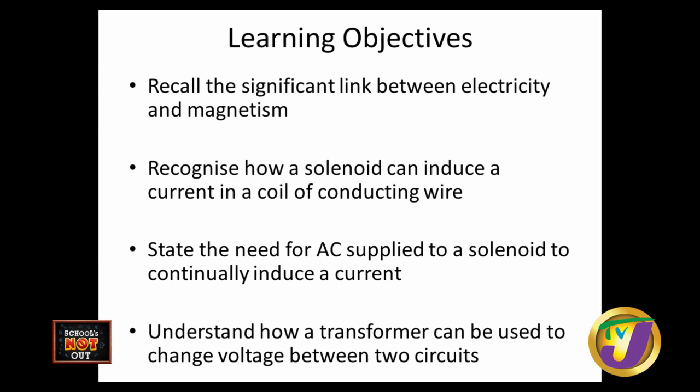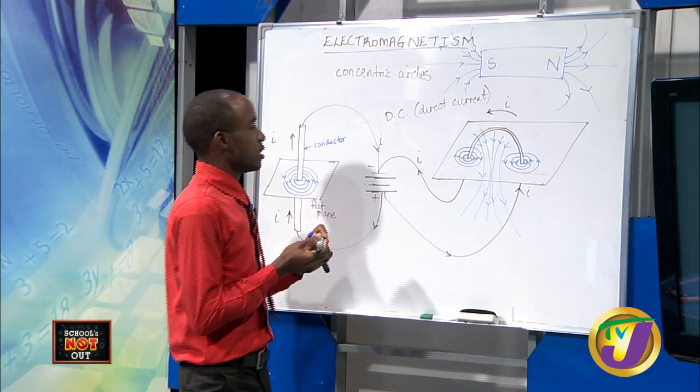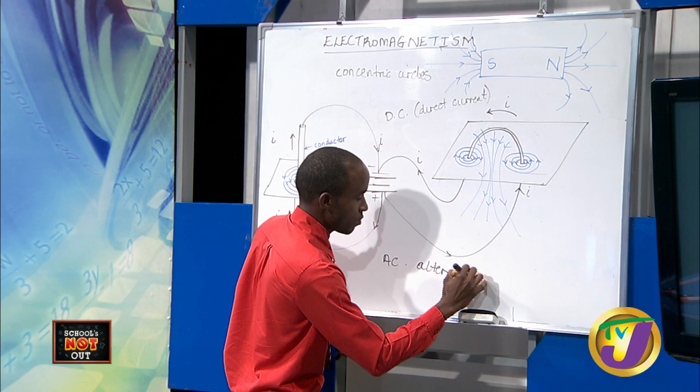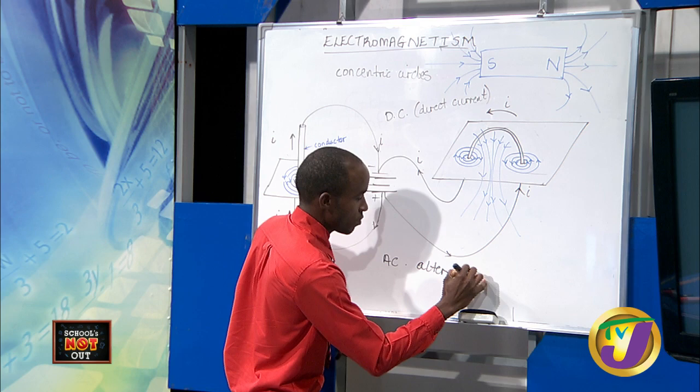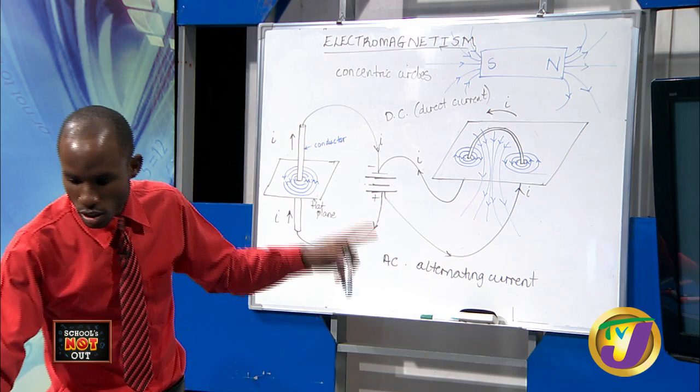We're going to look at how this applies to actual coils of wire. The term solenoid simply refers to that bunch of wires. The significant link between electricity and magnetism: magnetism generates electricity, and electricity has an associated magnetism. Recognize how a solenoid can induce a current in a coil of wire. We're going to look at how the AC — alternating current — works here. Remember we looked at DC; we're now looking at AC. DC is one way, steady; AC is constantly changing, both ways.